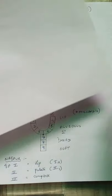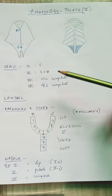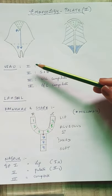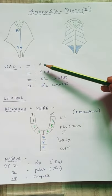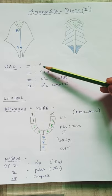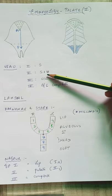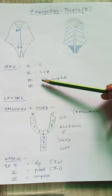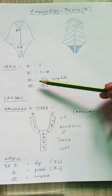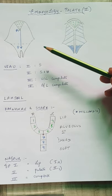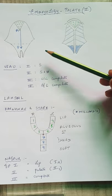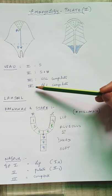The first classification is the VU (Wu) classification, which has 4 parts: Type 1 involves the soft palate, Type 2 involves the soft and hard palate, Type 3 is a complete unilateral cleft of the palate and lip, and Type 4 is a complete bilateral one.